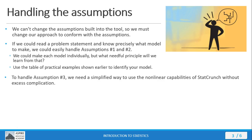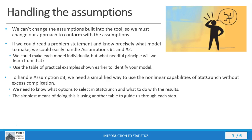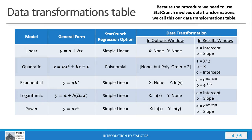To handle the third assumption, we need a simplified way to use those non-linear capabilities in StatCrunch without excess complication. We're going to construct another table to help with that, and I've already done that work for you. This table will tell you what options to select in StatCrunch and what to do with the results. Once I show you how to use the table, you'll see how it guides you through each step of the process for using StatCrunch to do non-linear regression. This is the data transformations table that we're going to be using.